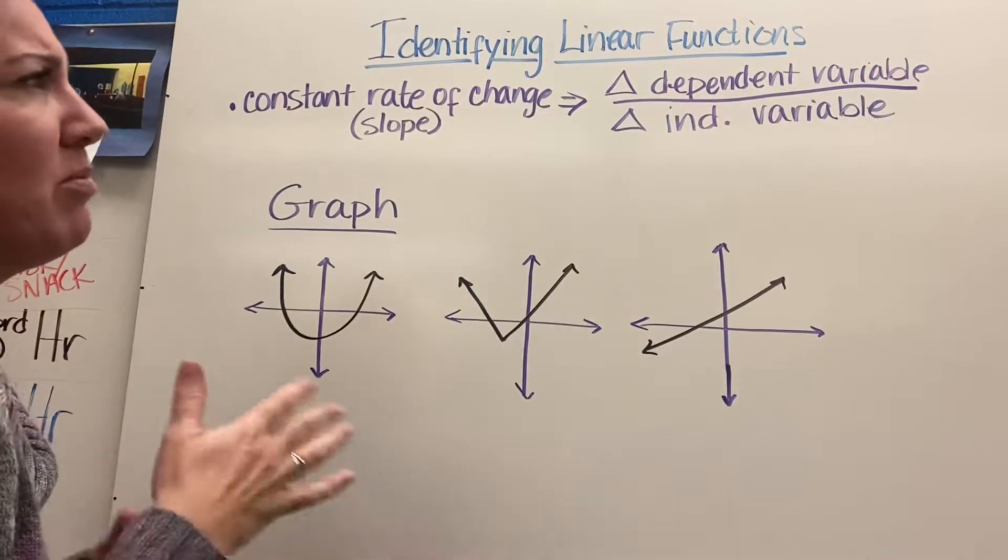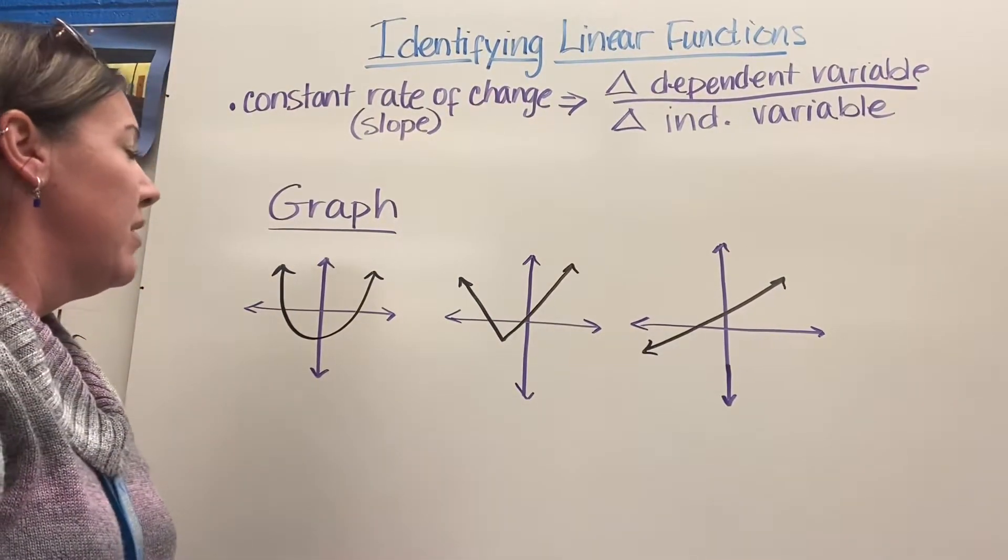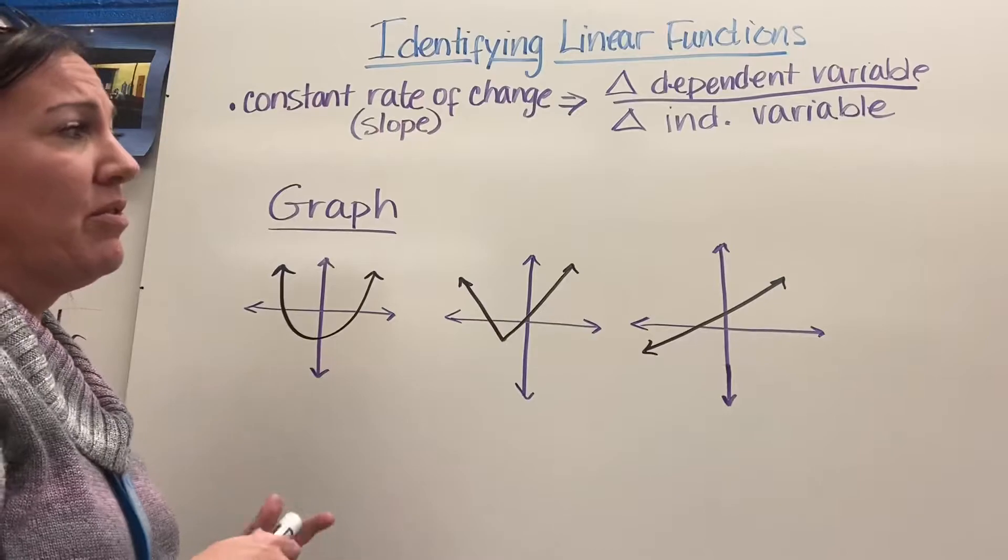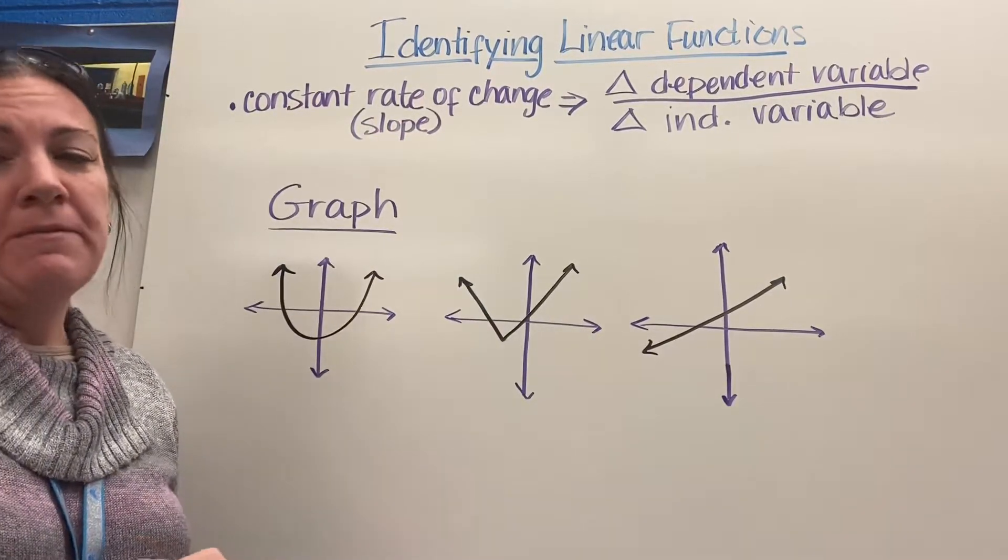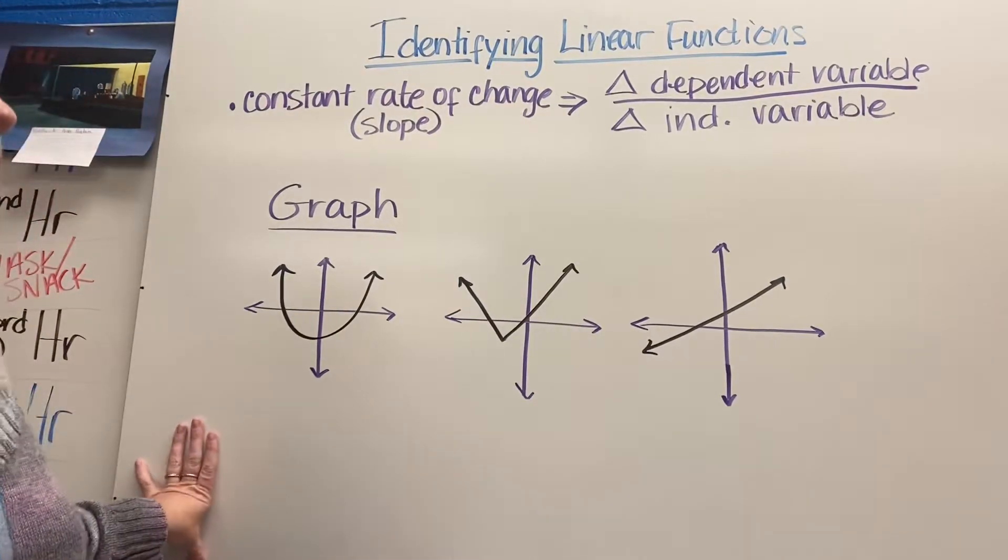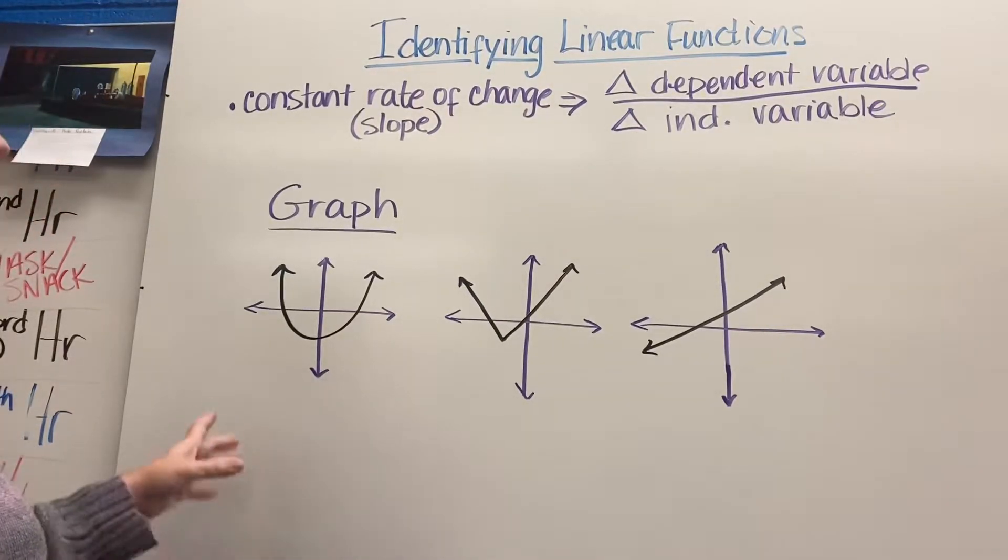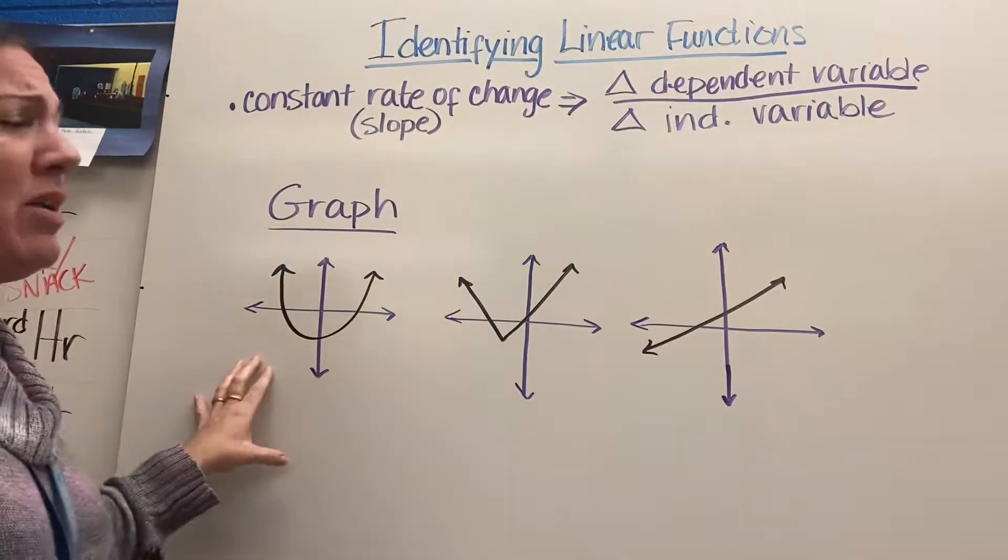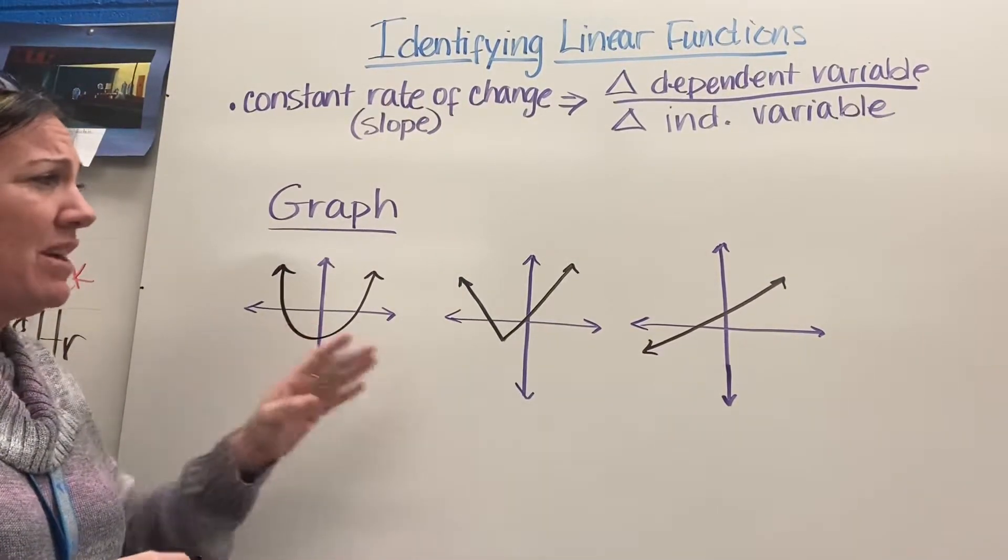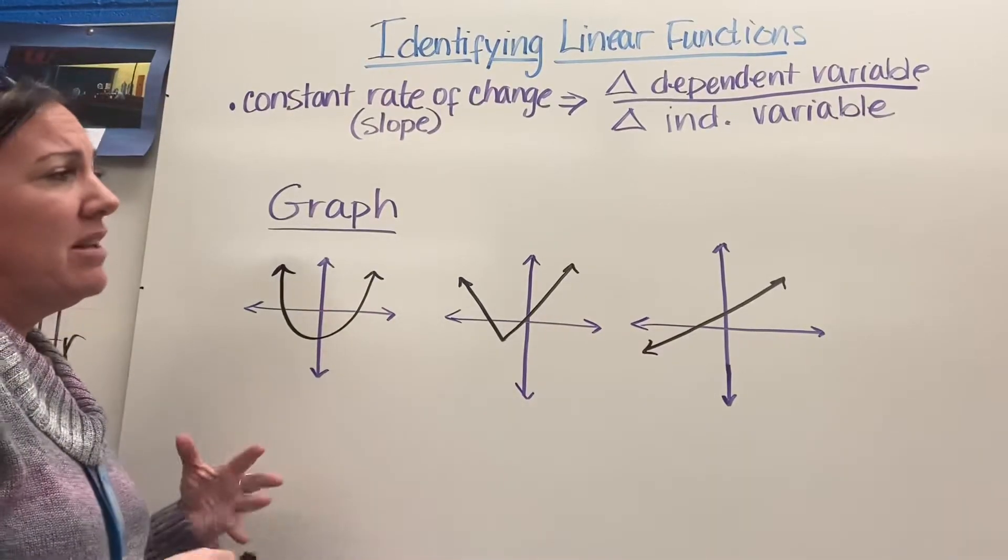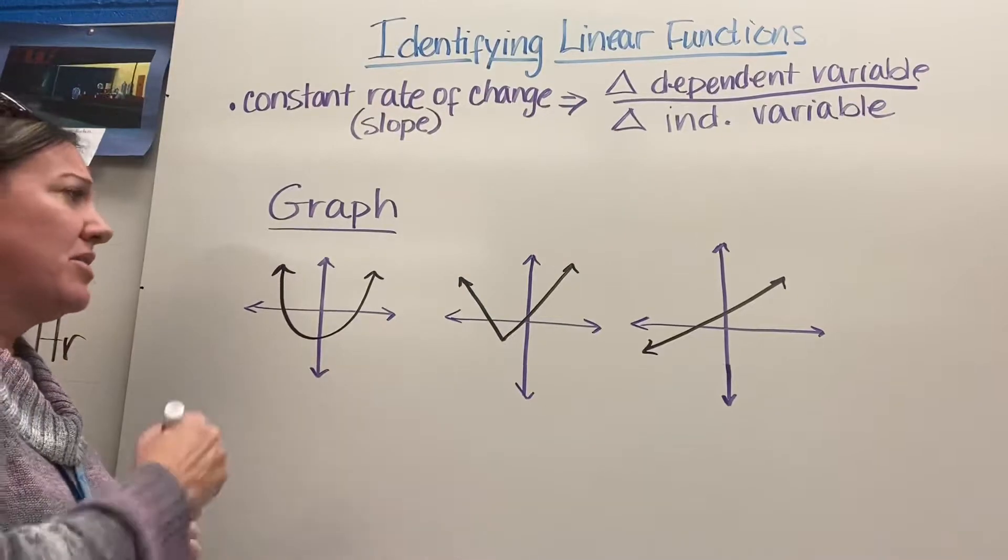We'll talk more about that, but first we're going to look at identifying linear functions from their graphs, from ordered pairs, and from an equation. If I look at a graph, the root word of linear is line. I have a nice parabola here, and yes it is a function—it's going to pass a vertical line test—but it's not linear. It's not a line, this is a curve, so this is nonlinear.